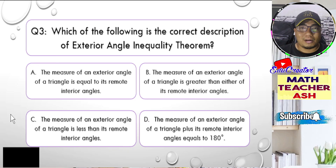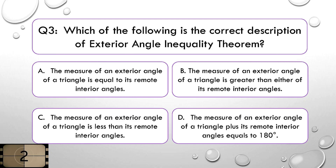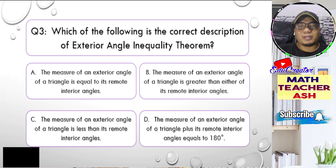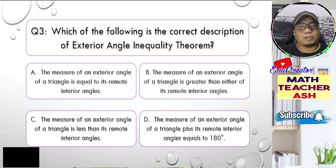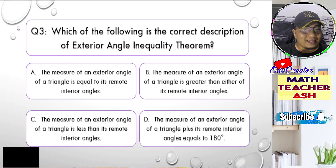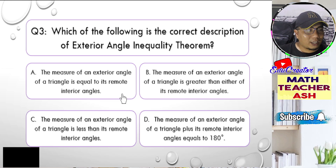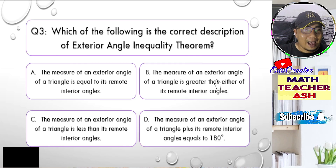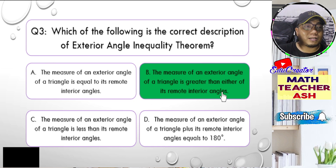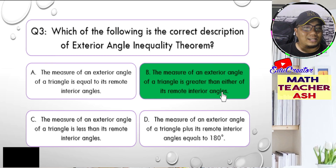Let's talk about exterior angles. If you know the relationship of exterior angles in a triangle, remember that the exterior angle is basically equal to the sum of its remote angles. So if that is the case, then we can say that each remote angle of that exterior angle is always less than the exterior angle. Therefore, the measurement of the exterior angle is always bigger than its remote angle, and the correct answer is letter B.